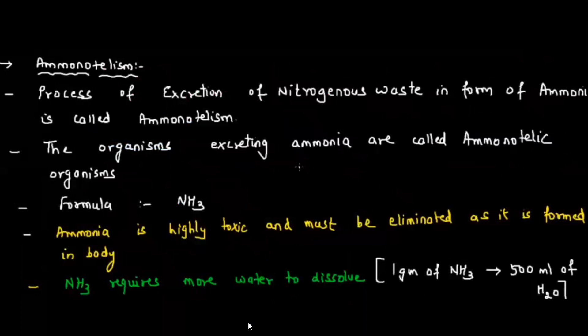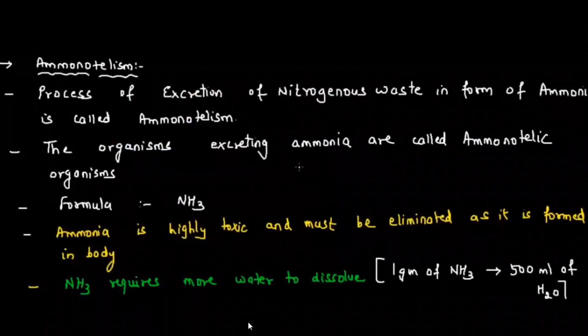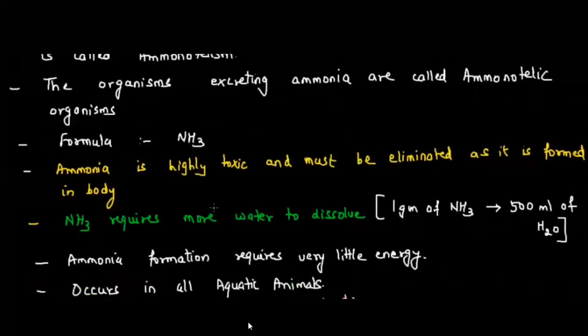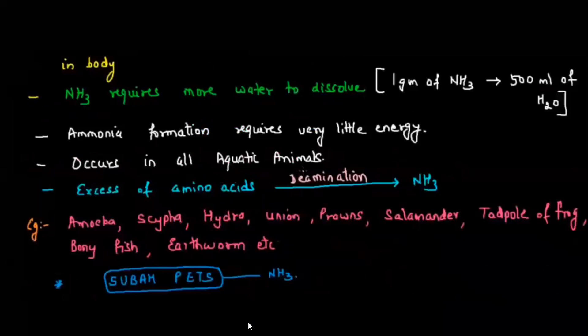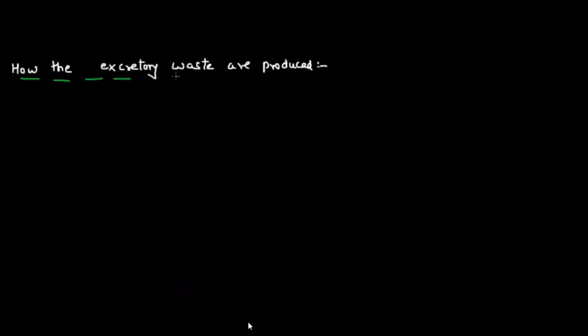To distinguish between the three modes: ammonotelism — nitrogenous waste in the form of ammonia (NH₃), highly toxic, cannot be stored, requires 500 ml water per gram; ureotelism — nitrogenous waste as urea (NH₂-C=O-NH₂), less toxic, can be stored, requires 50 ml water per gram; uricotelism — nitrogenous waste as uric acid (C₅H₄O₃N₄), least toxic, can be stored for long time, requires only 10 ml water per gram.